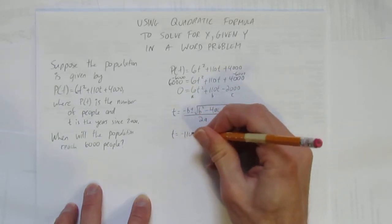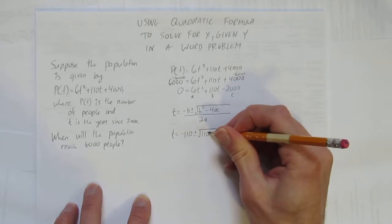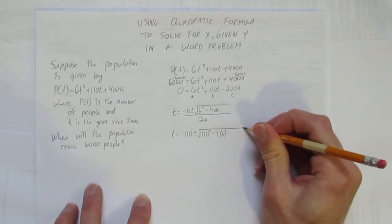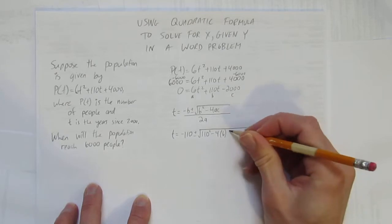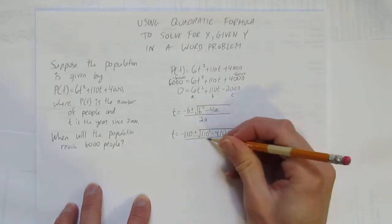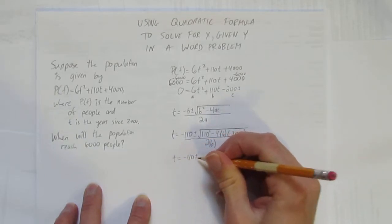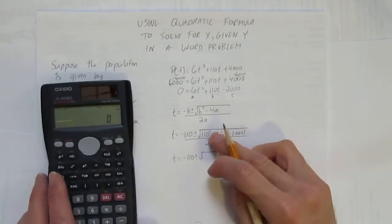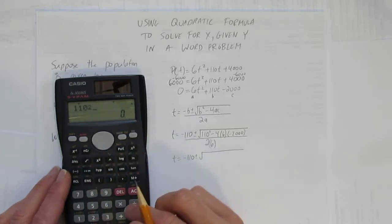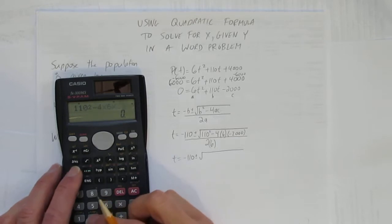So t equals negative b—that's negative 110—plus or minus the square root of b squared—that's 110 squared—minus 4 times a, which is 6, times c, which is negative 2,000, all over 2 times 6.